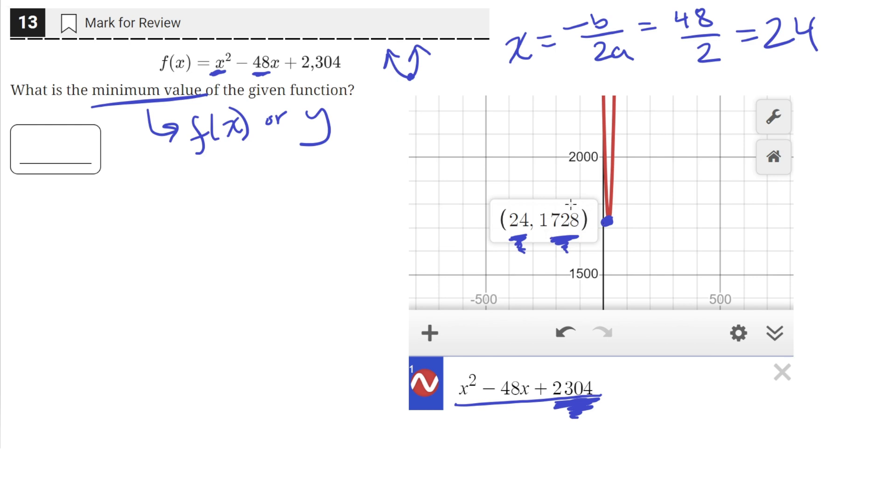So this is the smallest value of y in the entire function, which we can see. The quadratic goes up after the vertex, so the minimum value of f of x is 1728.